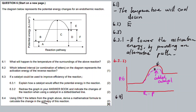For question 6.4, enthalpy is the difference in energies between the products and the reactants. Delta H is enthalpy. We need to calculate delta H using the letters from the graph.